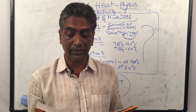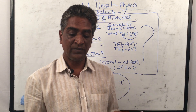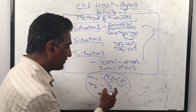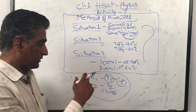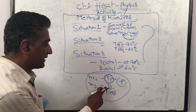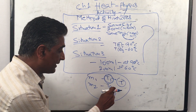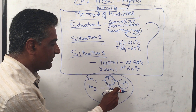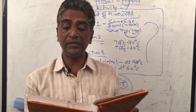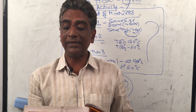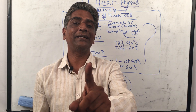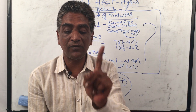The temperature of the mixture is lower than the temperature of the hotter sample but higher than the temperature of the colder sample. So T is between T1 and T2. The hotter sample loses heat and the colder sample gains heat. This means the hot sample has lost heat and the cold sample has gained heat.